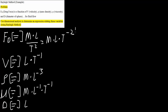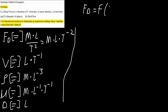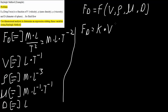Now we go back to our problem statement: drag force is a function of velocity, density, viscosity, and diameter. Using Rayleigh's method, we write FD equal to K — a constant — times V raised to A, times density raised to B, times viscosity raised to C, times diameter raised to D, where A, B, C, and D are arbitrary constants.